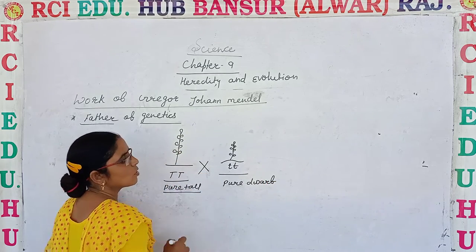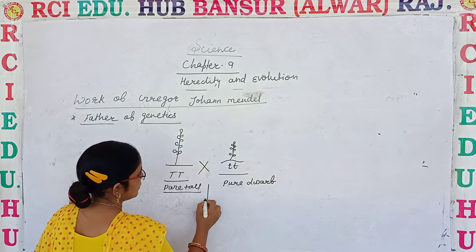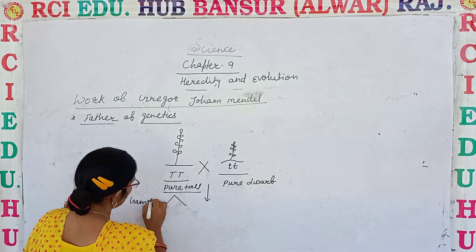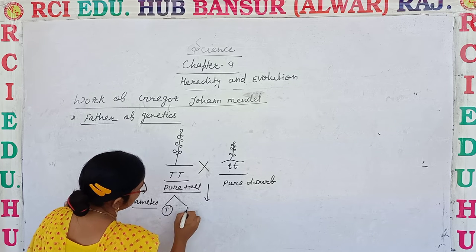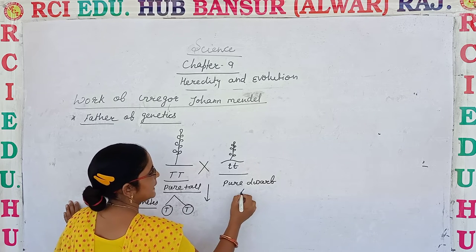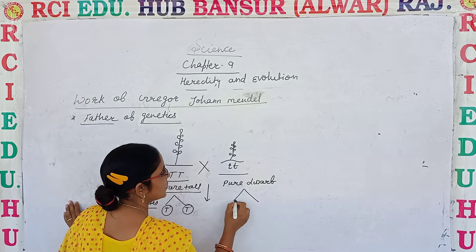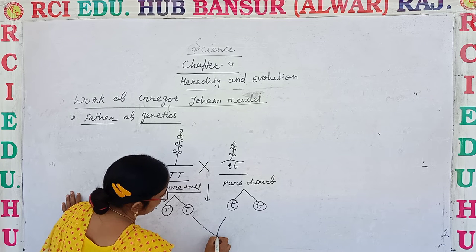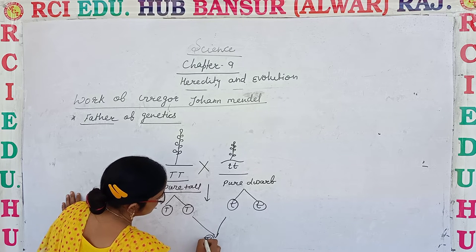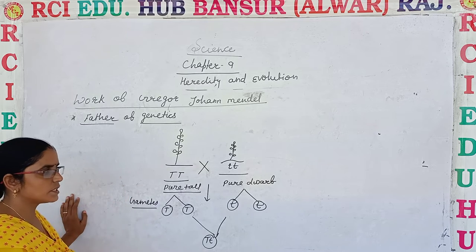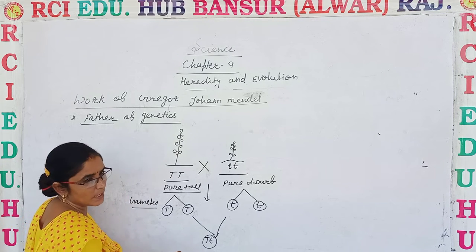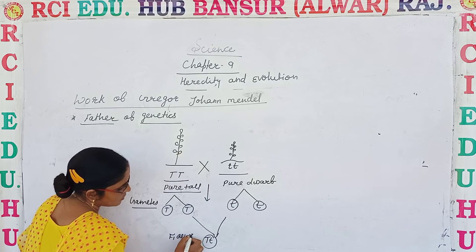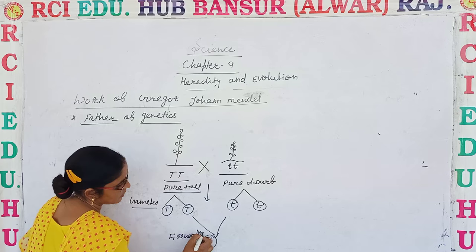When these two plants are crossed, there are two gametes from the tall plant — capital T and capital T — and two gametes from the dwarf plant — small t and small t. The F1 progeny we get is capital T and small t. So all the plants in the F1 generation have the genotype capital T small t. This is known as the F1 generation, or the first filial generation.